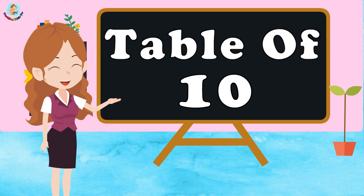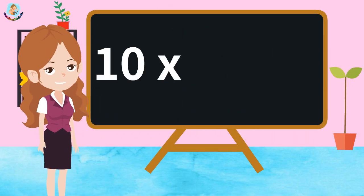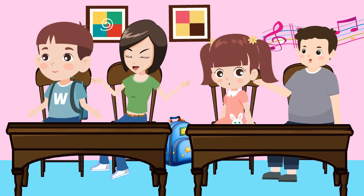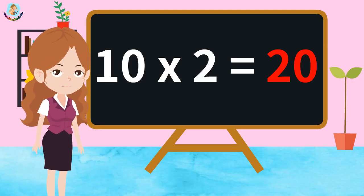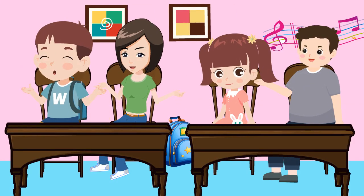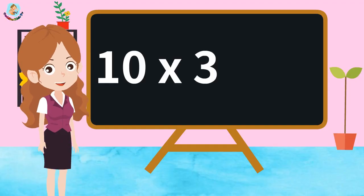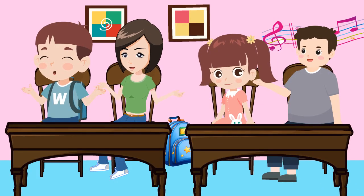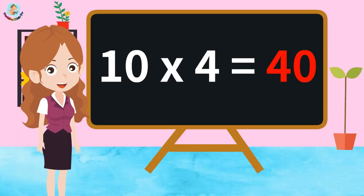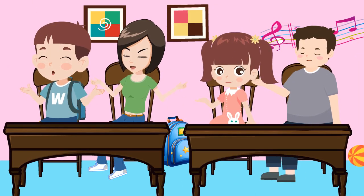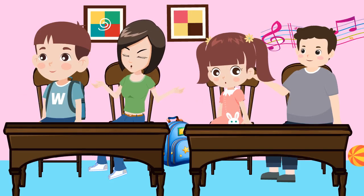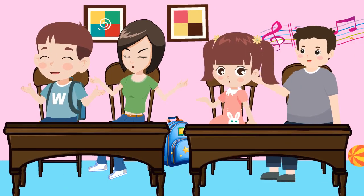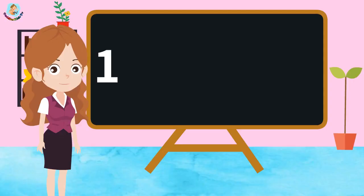Table of Ten. Ten Ones Are Ten. Ten Twos Are Twenty. Ten Threes Are Thirty. Ten Fours Are Forty. Ten Fives Are Fifty.